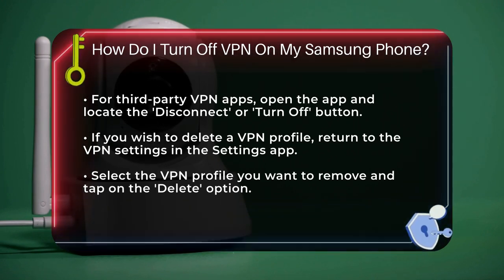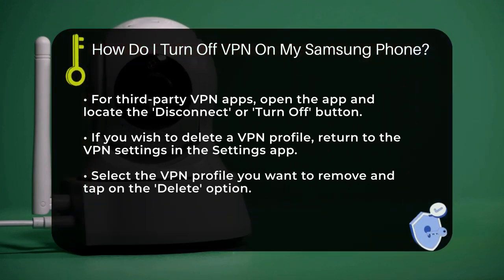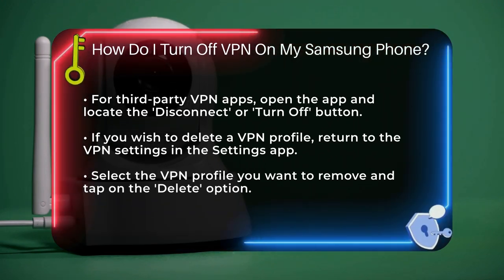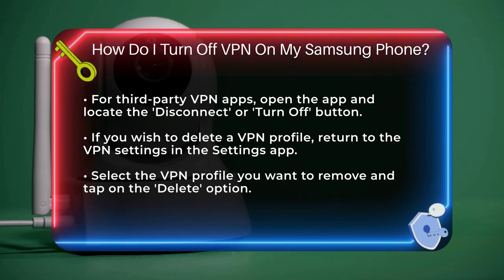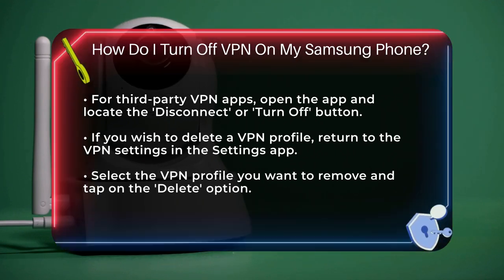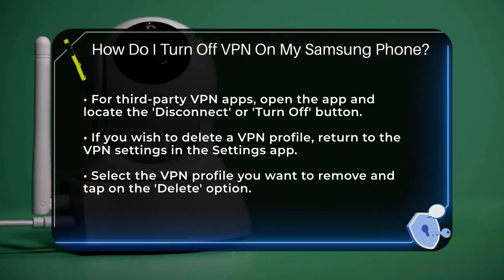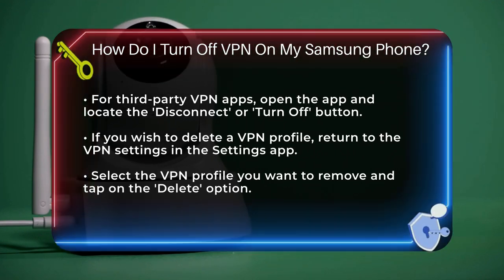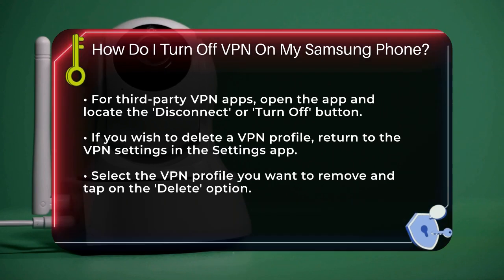In some cases, you might want to delete a VPN profile entirely. To do this, go back to the VPN settings in your phone's Settings app, select the VPN profile you want to delete, and tap on the Delete option.